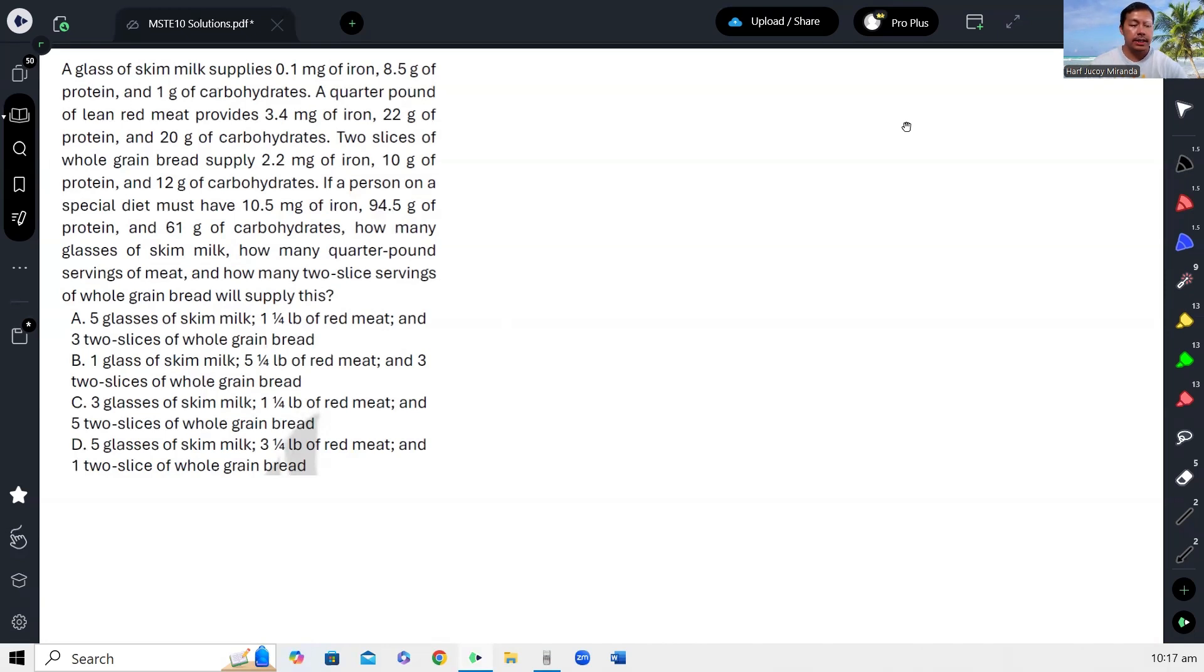If a person on a special diet must have 10.5mg of iron, 94.5g of protein, and 61g of carbohydrates, how many glasses of skimmed milk, how many quarter pound servings of meat, and how many 2 slice servings of whole grain bread will supply this?